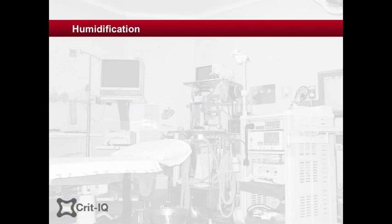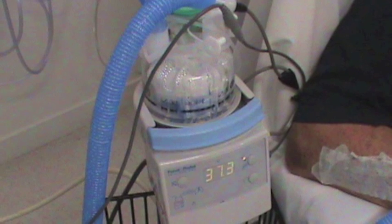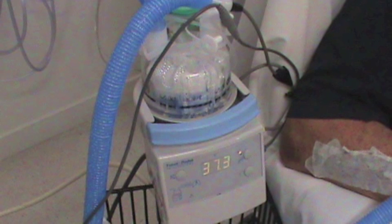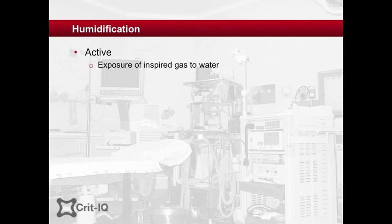A number of methods for ensuring heating and humidification exist. Essentially these fall into two groups: active and passive. Active humidification involves a device inserted into the circuit that actively creates humidification of the air by exposing it to a reservoir of sterile water. The process of humidification is enhanced by warming the water and the gas.